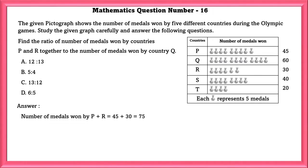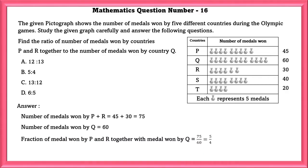Number of medals won by P and R together is 75. Number of medals won by Q is equal to 60. Fraction of number of medals won by P and R together with the number of medals won by Q is equal to 75 by 60, which is equal to 5 by 4. So the ratio of medals won by P and R together with the medal won by Q is equal to 5 is to 4.